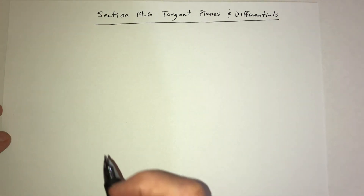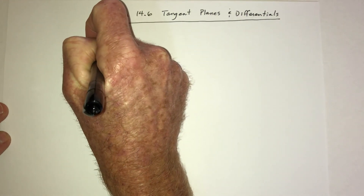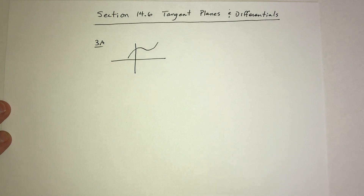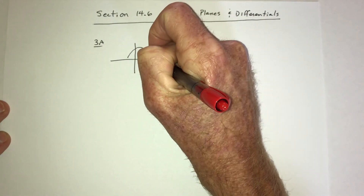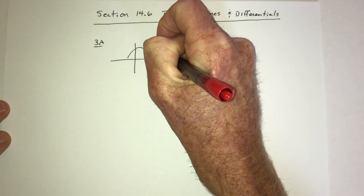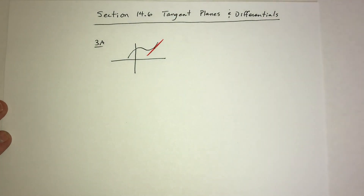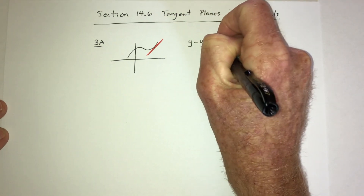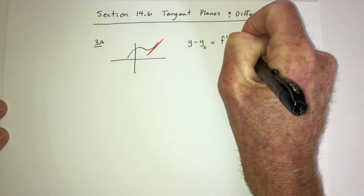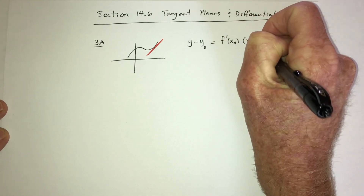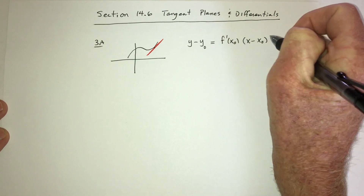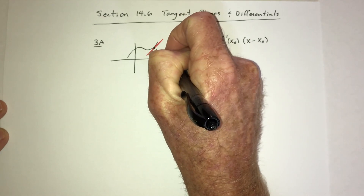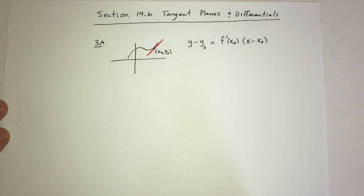Before we get to the Math 3C stuff, let's look at some Math 3A. If you have a function and you're given a point and asked for the equation of the tangent line, you would use the derivative to find the slope of that line. Then you could go y minus y-naught equals the slope times x minus x-naught, assuming the point is (x₀, y₀).